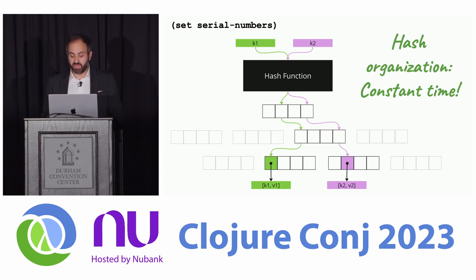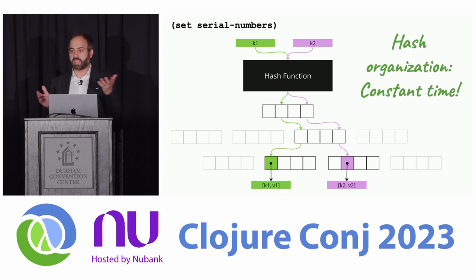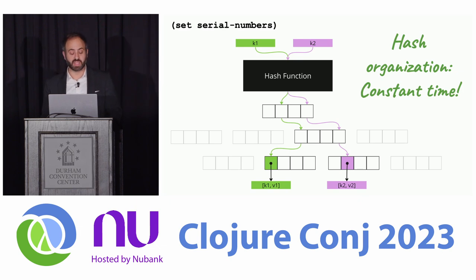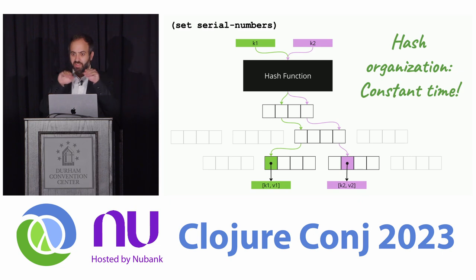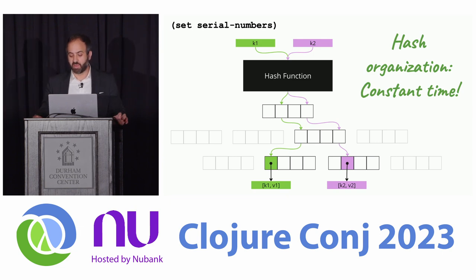When we're looking up things by key — and this is what you're doing when you're checking for membership in a set — you are actually getting an element by key. It just happens to be that sets are maps where the key and the value are the same thing. So we have a trick here, and this is hash organization. This is better than sorted organization for this use case because now it's effectively constant time. We use these data structures in Clojure everywhere — hash maps, hash sets — they're effectively constant time.